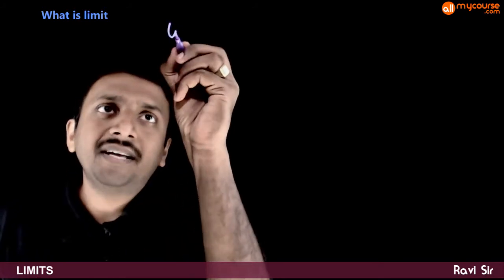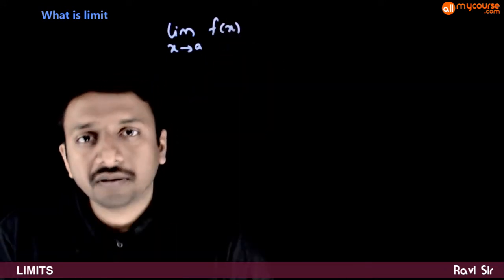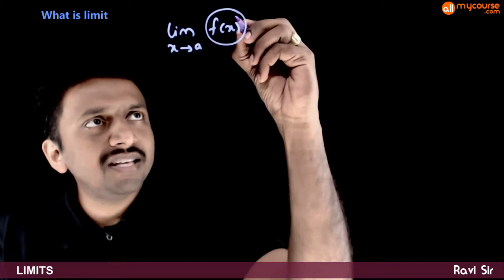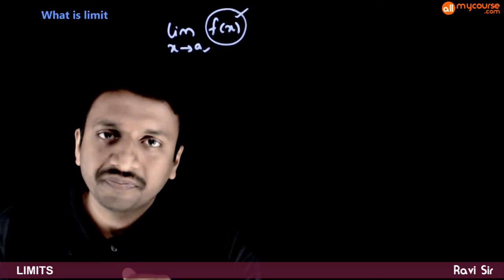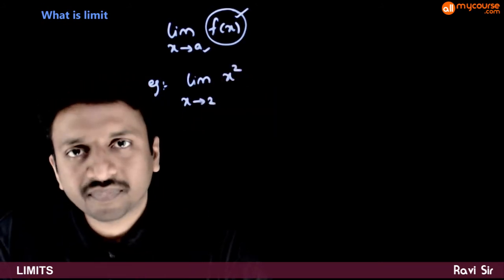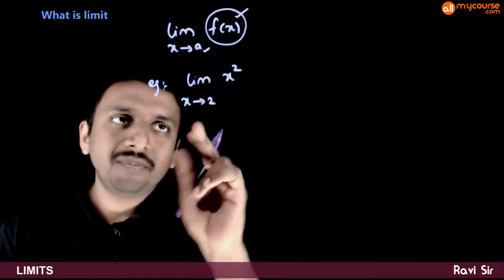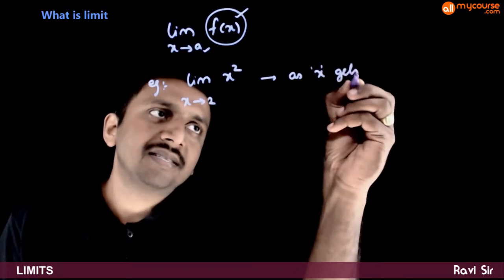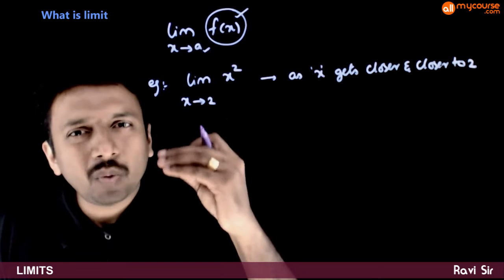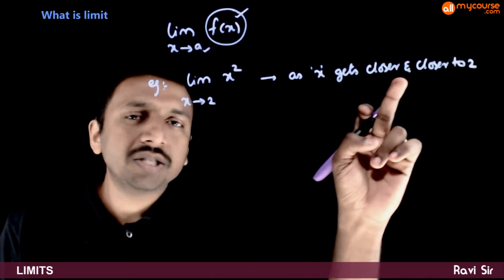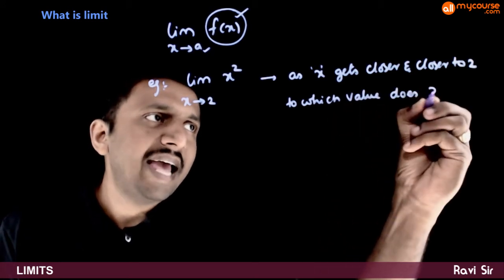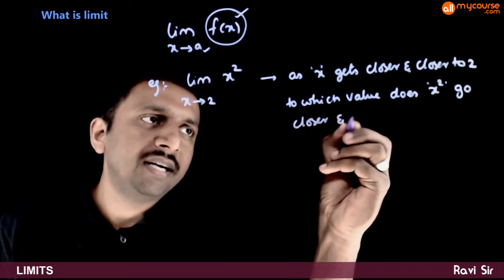When you are asked to find limit x tends to a, f of x, what are you actually being asked to find? For example, if I have to calculate limit x tends to 2, x square — the meaning of this is: as x gets closer and closer to 2, that is x is going very, very close to 2, to which value does x square go closer and closer to?